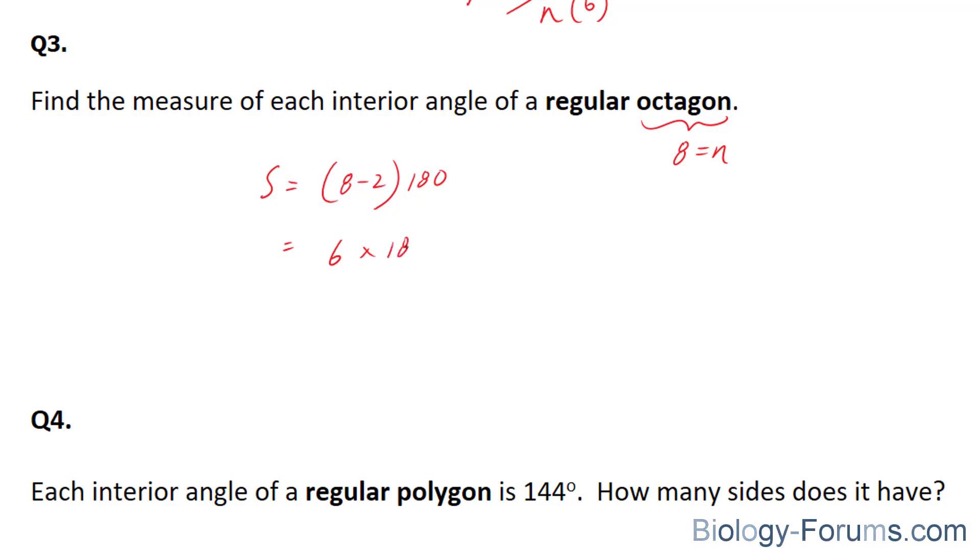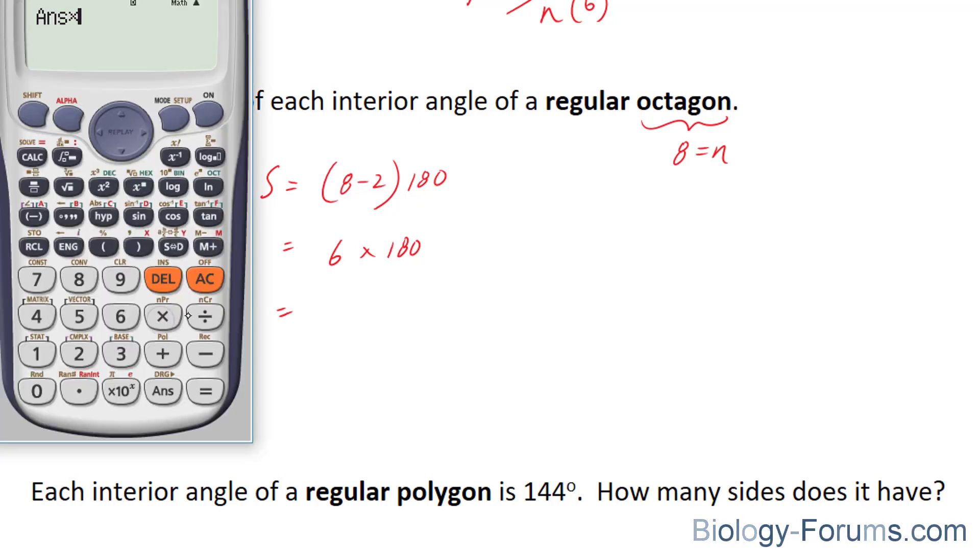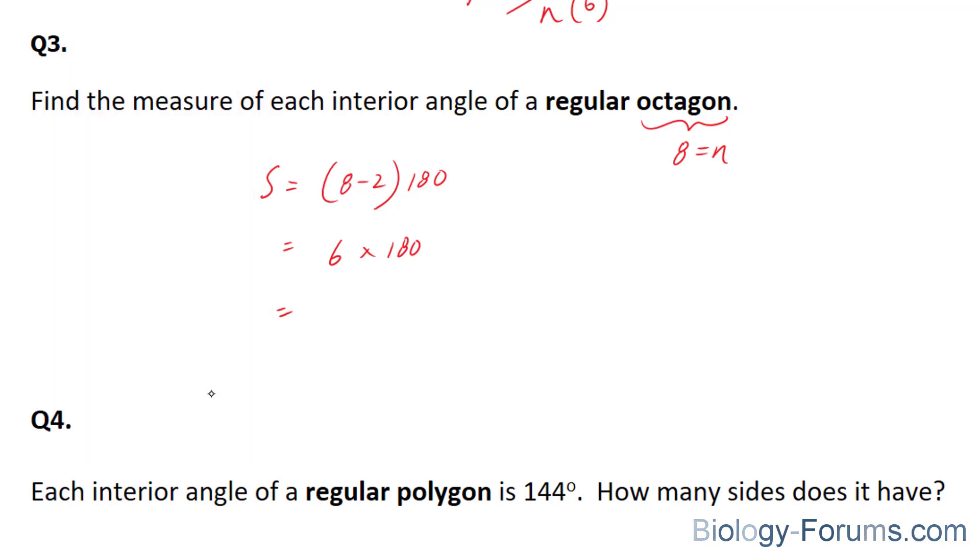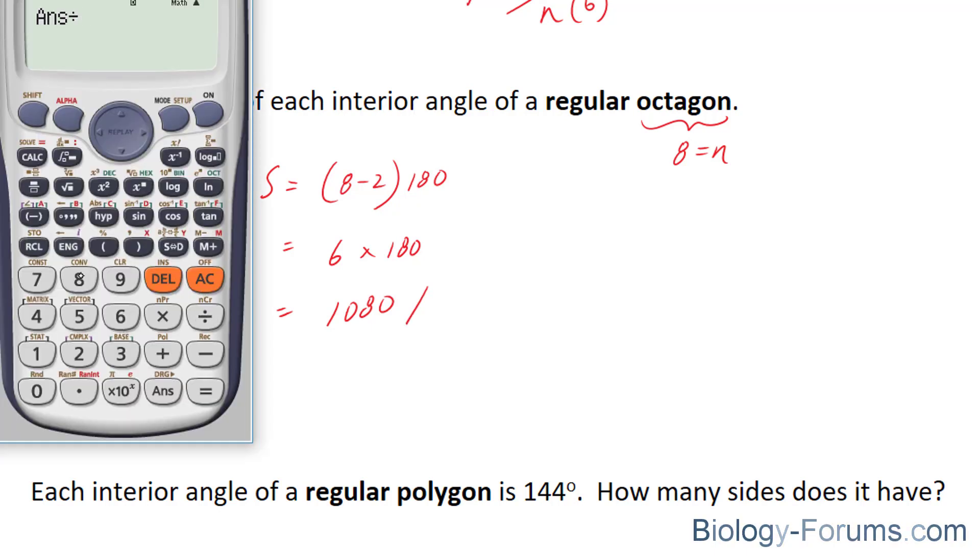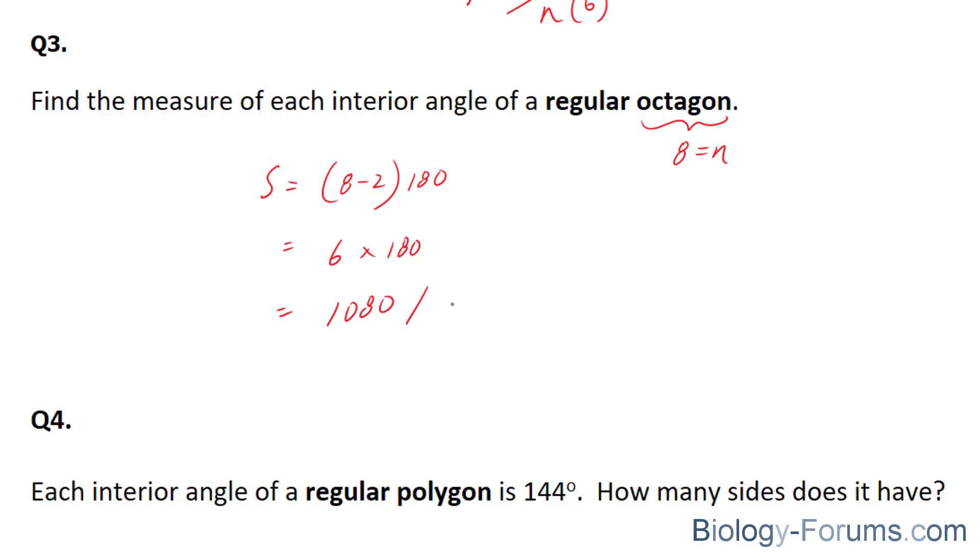6 times 180 degrees is equal to 1080. And now, since they want us to find each individual interior angle, we're going to divide this, and we end up with 135 degrees per angle.